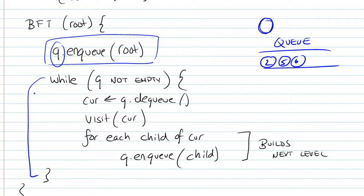Then we're going to come back to that condition and ask ourselves, is the queue empty? No, it's not. We have three nodes waiting. So we're going to dequeue.